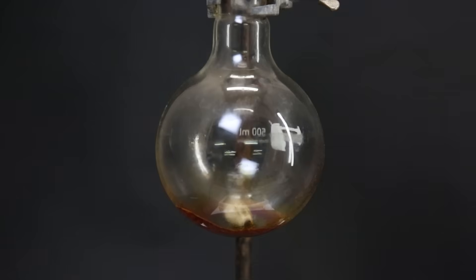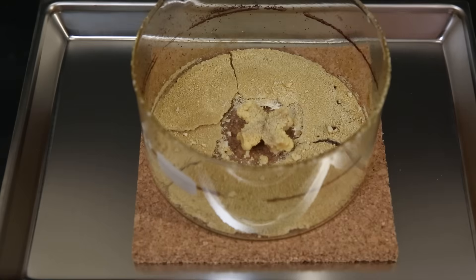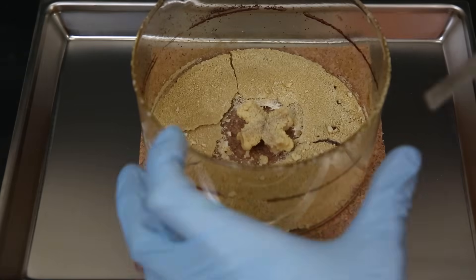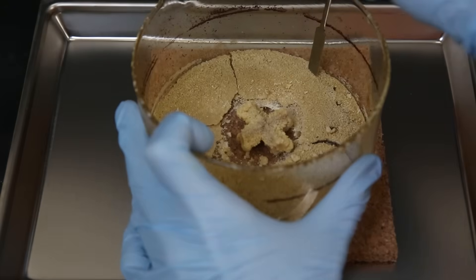After almost all the DCM had come over, I was left with a thick red liquid. So to get it out properly, I diluted the solution and washed it to get everything out. And then I transferred it to a crystallizing dish and evaporated off all the solvent. After that was done, I was left with a crunchy cookie of lignin oxidation products with a sweet woody smell.